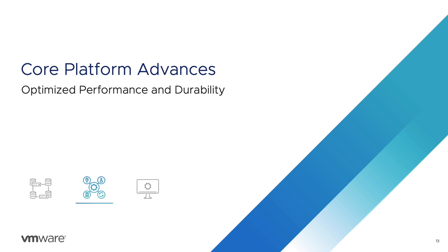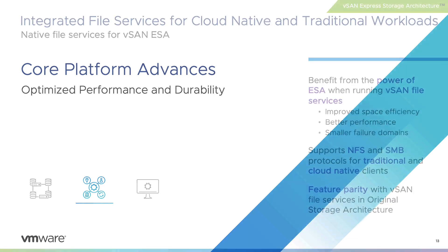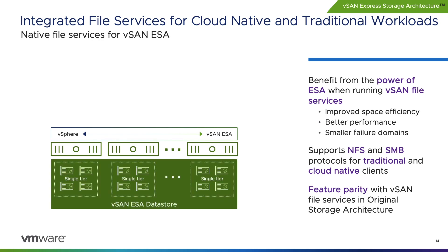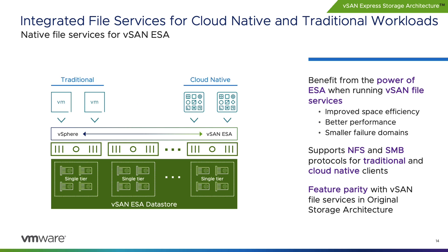vSAN 8 Update 2 brings vSAN File Services to the Express Storage Architecture. Customers will now be able to benefit from the performance and efficiencies of the ESA for environments that use vSAN File Services. All capabilities of vSAN File Services are available in both the original storage architecture and the ESA. vSAN File Services in ESA also benefits from additional enhancements, including an improved Active Directory configuration check, improved network configuration, and fast failover of protocol service containers when entering a host into maintenance mode.